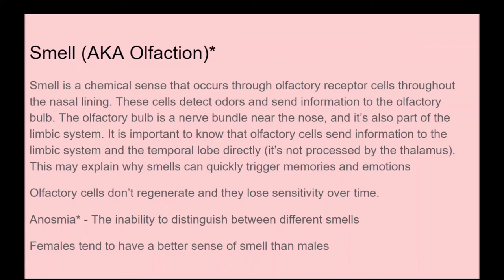Next, we get into smell, also called olfaction. Smell is a chemical sense that occurs through olfactory receptor cells throughout the nasal lining. These cells detect odors and send information to the olfactory bulb, a nerve bundle near the nose that is also part of the limbic system. Importantly, olfactory cells send information directly to the limbic system and the temporal lobe, bypassing the thalamus — unlike vision. This may explain why smells can quickly trigger memories and emotions. Olfactory cells don't regenerate and lose sensitivity over time. Anosmia is the inability to distinguish between different smells, and females tend to have a better sense of smell than males.